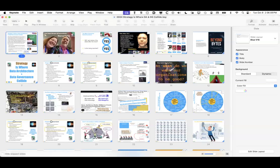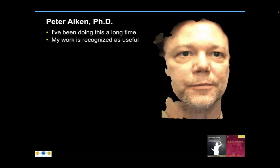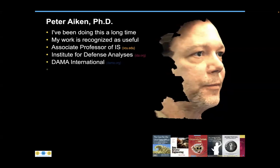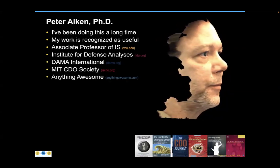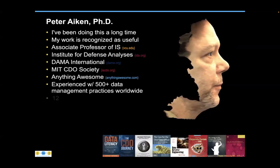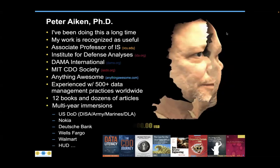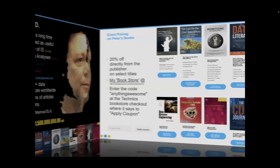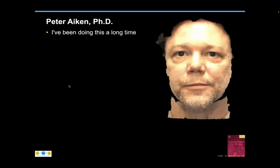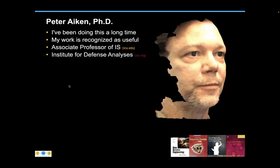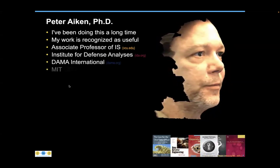Now let me introduce our speaker for today, Dr. Peter Aiken. Peter is an acknowledged data management authority, associate professor at Virginia Commonwealth University, president of DAMA International, and associate director of the MIT International Society of Chief Data Officers. For more than 35 years Peter has learned from working with hundreds of data management practices in 30 countries. Among his books are the first on CDOs, the first on monetization of data for profit and good, and the first on modern strategic data thinking.